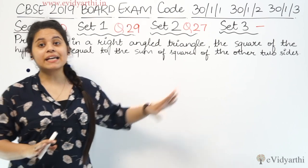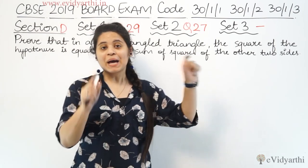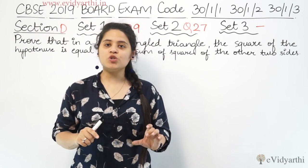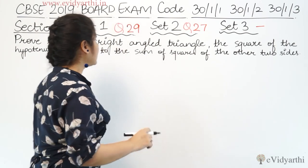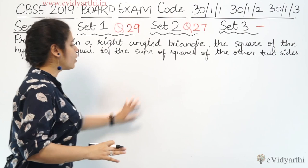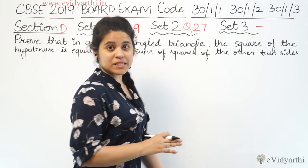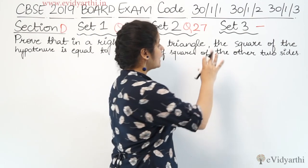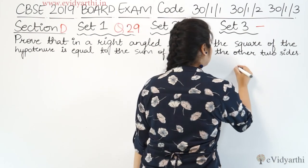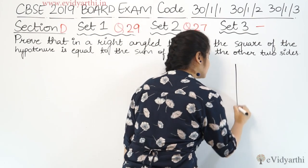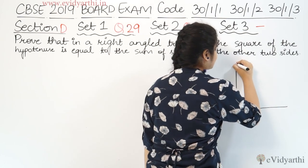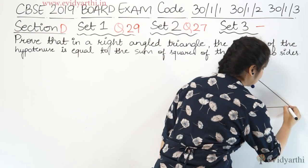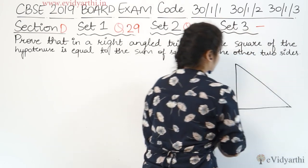Question पढ़के आपको पता चलेगा कि यहाँ पे हमें Pythagoras theorem को proof करना है. तो यह proof हमने पहले भी questions में किया हुआ है. सबसे पहले हम figure बना लेते हैं — यह हमने right-angled triangle बना लिया इस तरह से.